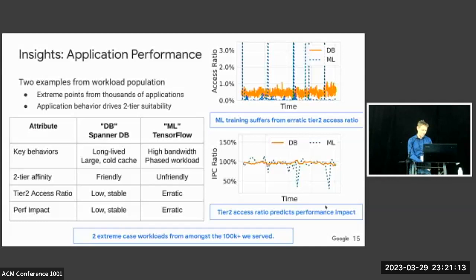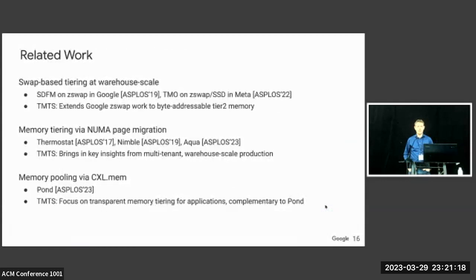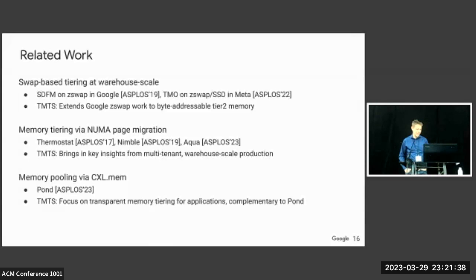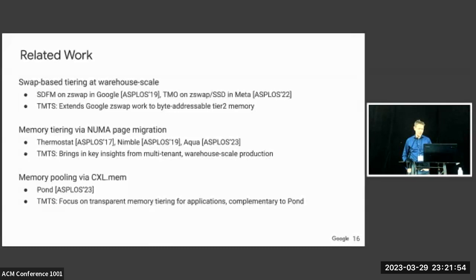Regarding related work: Z-Swap from Google and TMO from Meta looked at swap-based tiering at warehouse scale, and this work adds byte-addressable tier-two memory building on the Z-Swap 2019 paper. Thermostat, Nimble, and Aqua also look at memory tiering via page migration. Our contribution brings insights and new policies from a large multi-tenant warehouse-scale production environment. Finally, Pond looks at pooling via CXL.mem, which is complementary — Pond addresses memory stranding via disaggregation, whereas we focus on tiering application memory on a node.